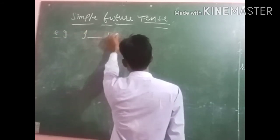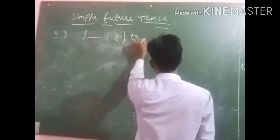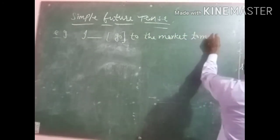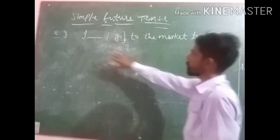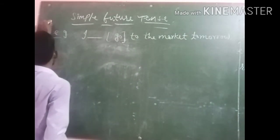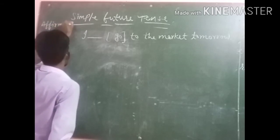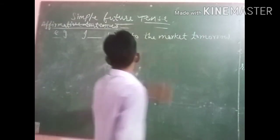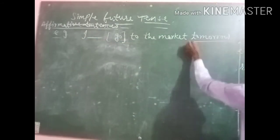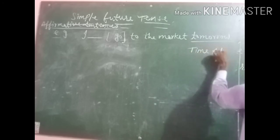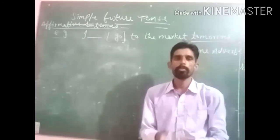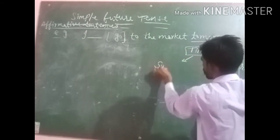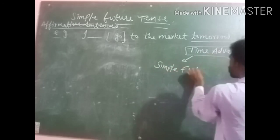Now I am going to teach with some examples. First example: 'I ___ go to market tomorrow.' This is an affirmative sentence. 'Tomorrow' is the time adverb. Tomorrow is used in simple future tense. The approach is: first identify the time adverb — tomorrow — then identify the tense — simple future tense.